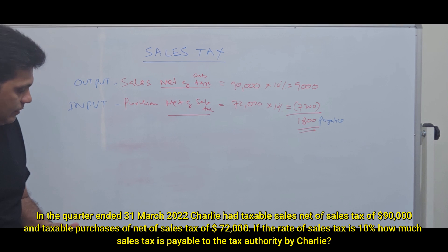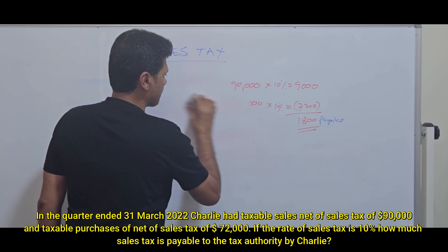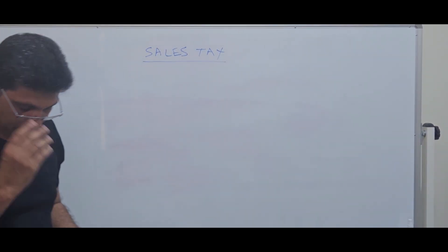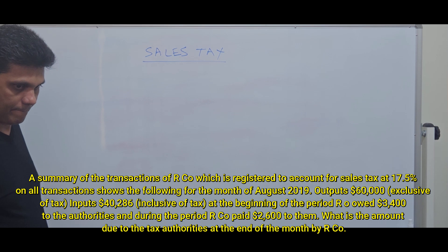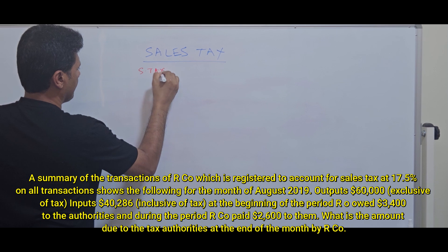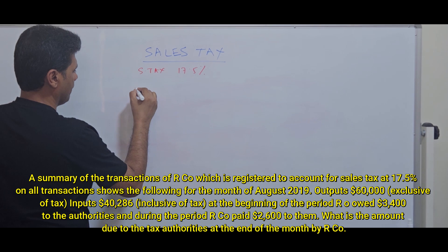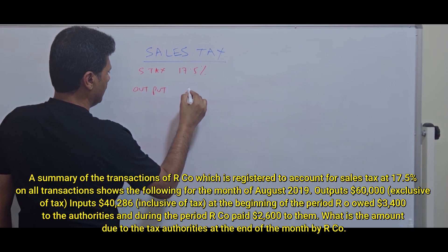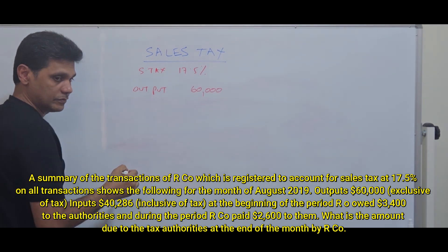Is that clear? Yes. Let's move on to the next question. A summary of the transactions of Ramsgate Co., which is registered to account for sales tax at 17.5% on all transactions, shows the following for the month of August 2029. Outputs: $60,000 exclusive of tax.